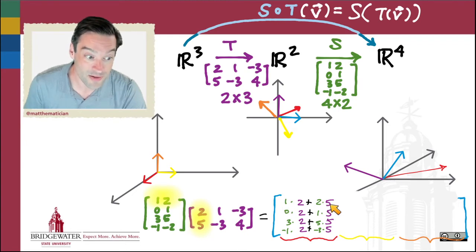One times two plus two times five. Then my next entry down is the second row dotted with the first column: zero times two plus one times five. Then the third entry: three times two plus five times five. And the fourth entry: negative one times two plus negative three times five.